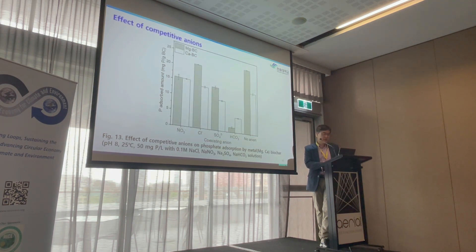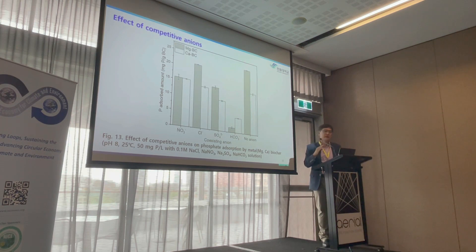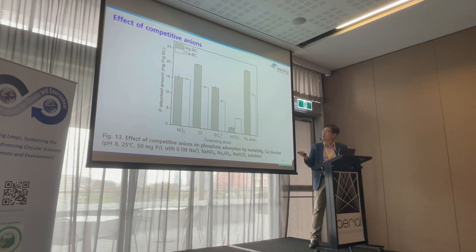Regarding competitive anions and their effect on phosphorus adsorption: bicarbonate gives heavy inhibition on phosphorus adsorption. Other anions like nitrate, fluoride, and sulfate result in about 70–80% of the control adsorption level. However, bicarbonate causes very severe inhibition on phosphorus adsorption.